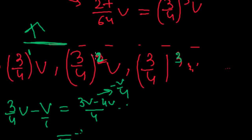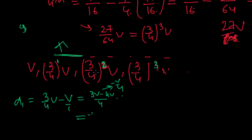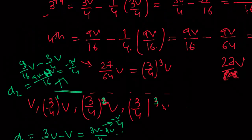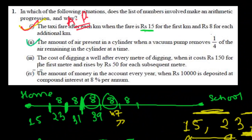Now D2: (3/4)²V minus (3/4)V. That is 9V/16 minus 3V/4. Taking LCM 16: that gives 9V minus 12V over 16, which is minus 3V upon 16. Since D1 is not equal to D2 — negative V/4 is not equal to negative 3V/16 — the common differences between the terms are not equal to each other. Therefore, the second question is not forming an AP. It's not an arithmetic progression.